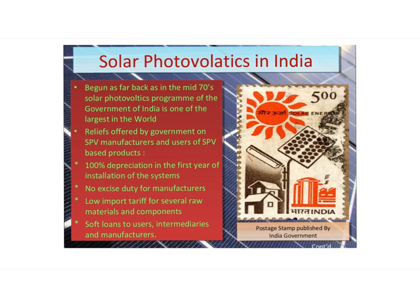When solar rays fall on the top layer, electrons from the valence band are promoted to the conduction band, which crosses the PN junction into the N-type semiconductor. A potential difference between the two layers is created, which causes the flow of electrons.